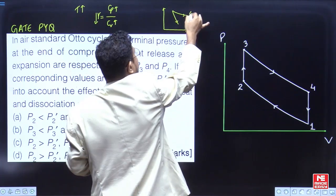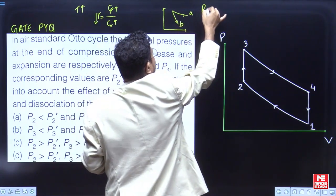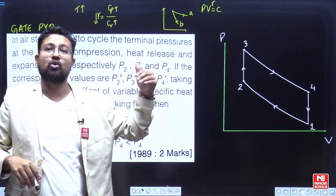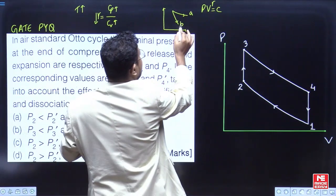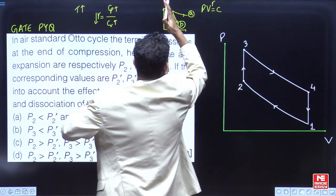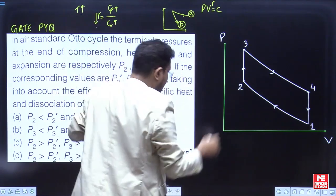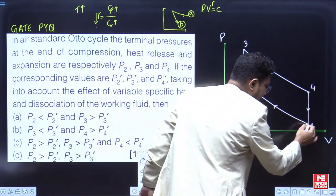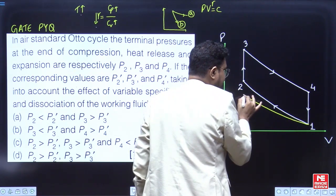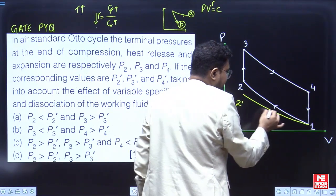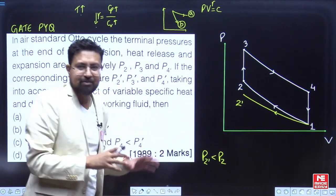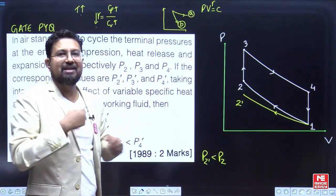For an adiabatic process, pV^gamma = constant. When gamma is higher, the curve becomes more steep. Since temperature increases during compression, gamma decreases, so the actual compression curve will be less steep than the ideal. Starting from point 1, we reach point 2' which is below point 2, meaning p2' is less than p2.